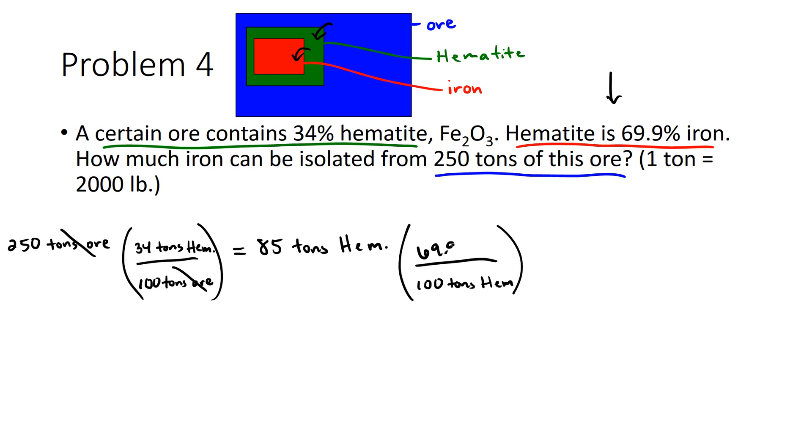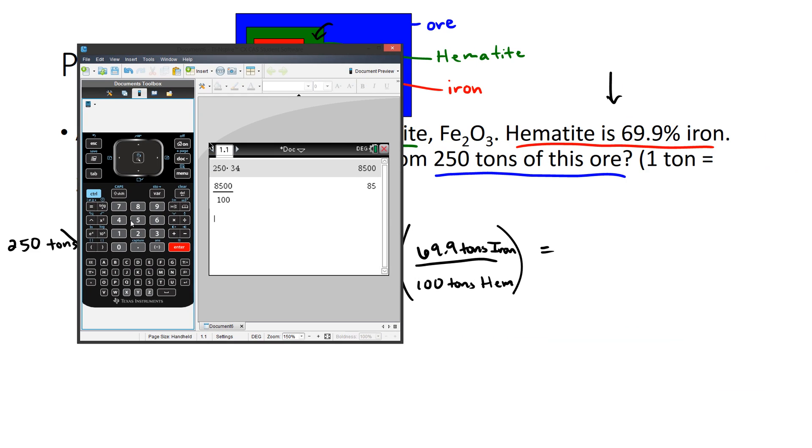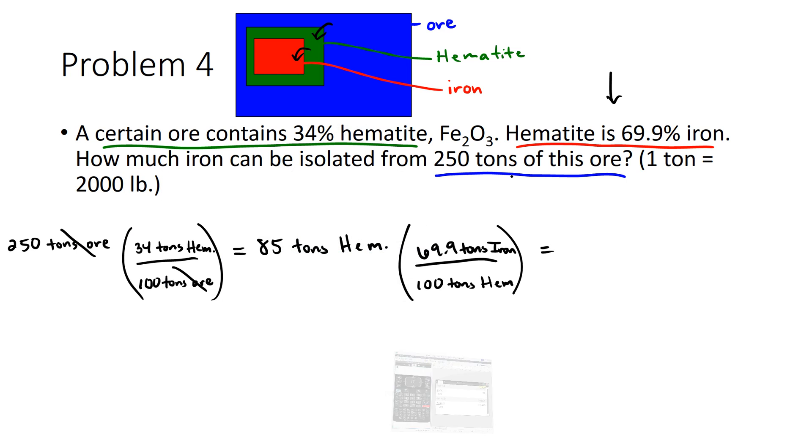And when we multiply 85 by 69.9 and divide by 100, we're given 59.415 tons of iron.